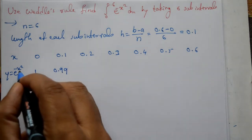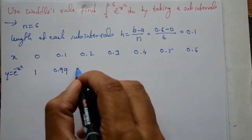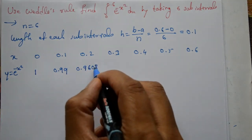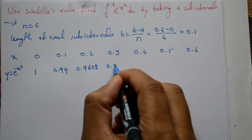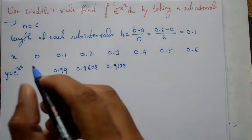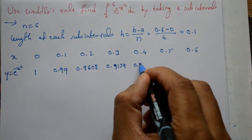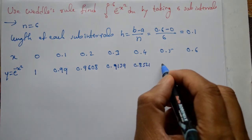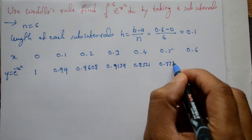Next, substituting 0.2 gives 0.9608. Then 0.3 gives 0.8521. Substituting 0.4 gives 0.77 double eight.